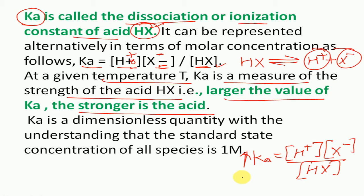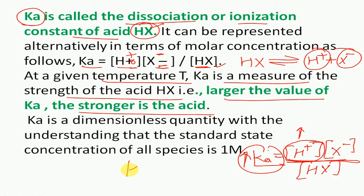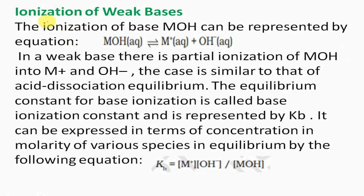The ionization of weak bases follows the same approach as weak acids. According to the Arrhenius concept, weak bases are those that release OH⁻ ions in water. So MOH in equilibrium gives M+ and OH⁻ — it partially dissociates. This leads to a base dissociation constant Kb, represented just like Ka: Kb = concentration of products upon concentration of reactants.